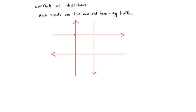Cross conflicts, or 90-degree conflicts, are four in number: one, two, three, four. Then left-going traffic — left-going traffic is like this.